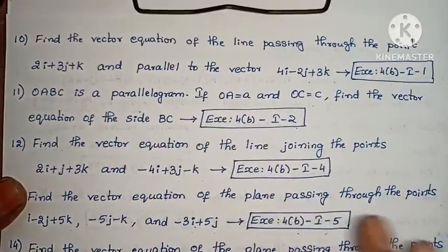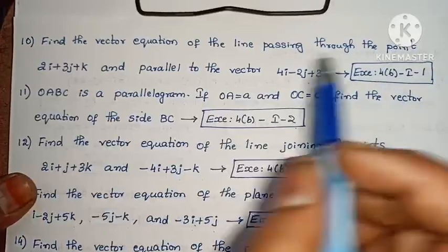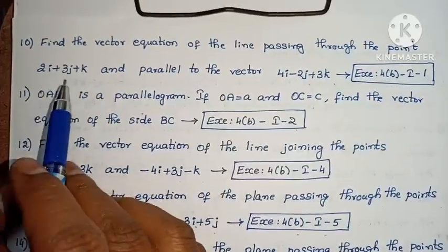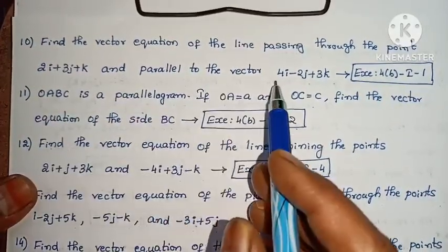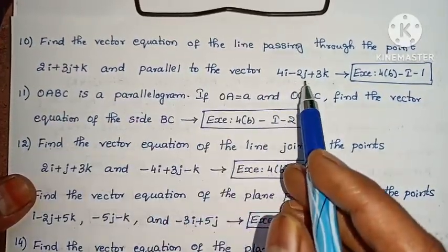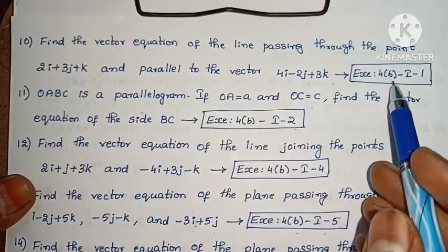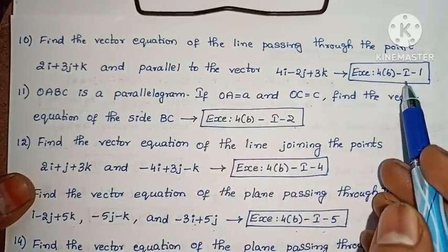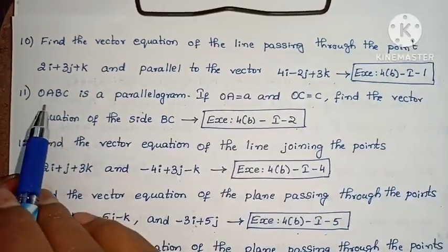Next: Find the vector equation of the line passing through the point 2i + 3j + k, and parallel to the vector 4i minus 2j + 3k. Exercise 4B, problem 1.